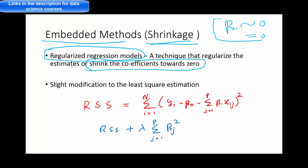So that's one type of selection method — or rejection method rather. How do we do shrinkage or regularization?